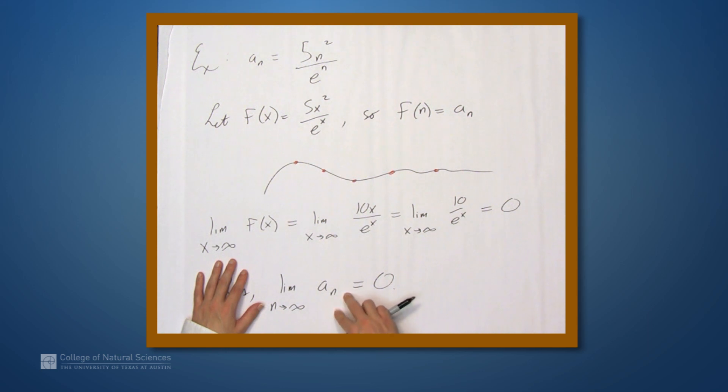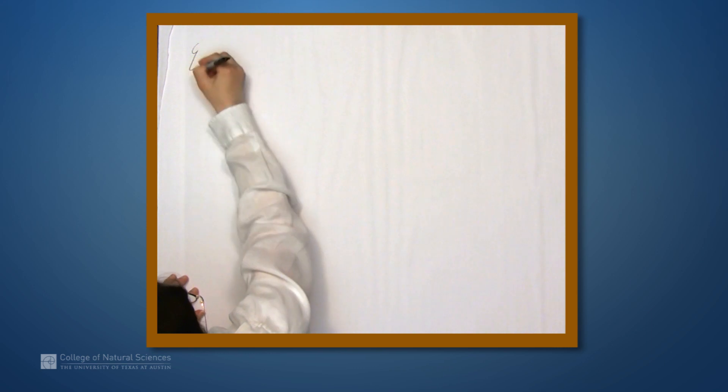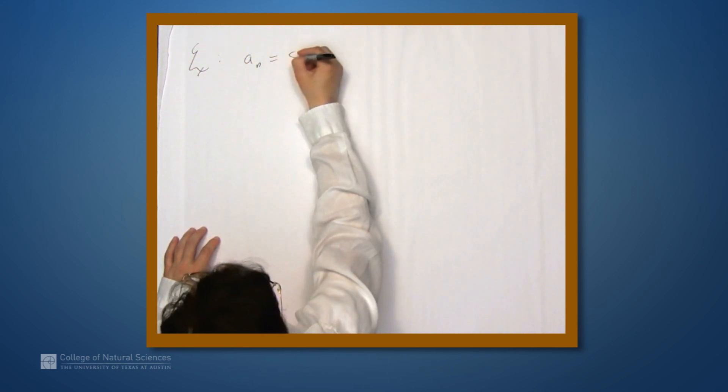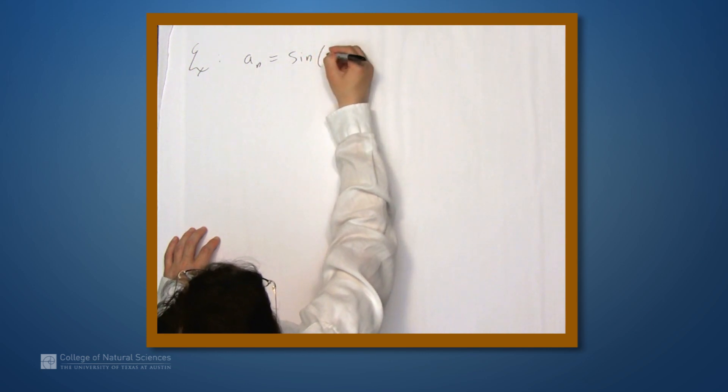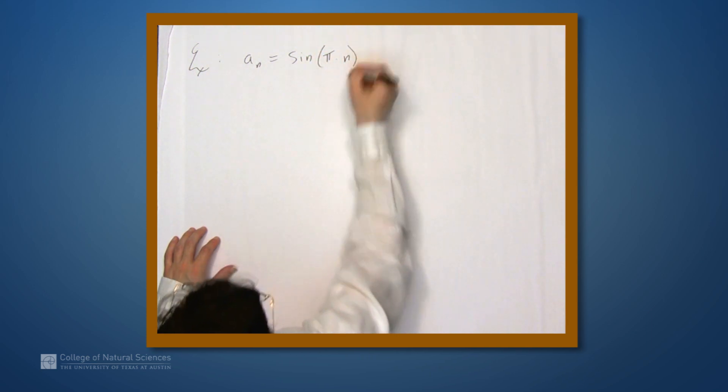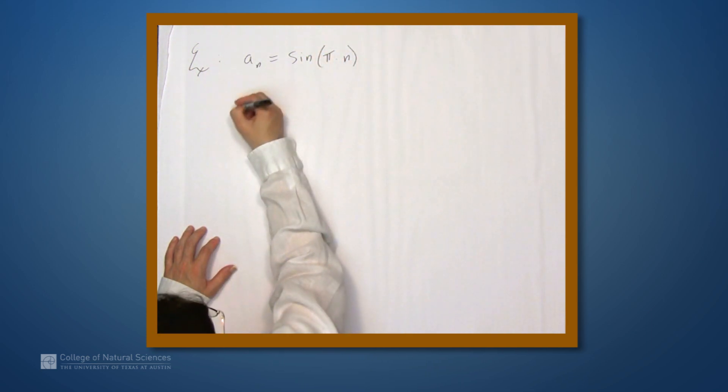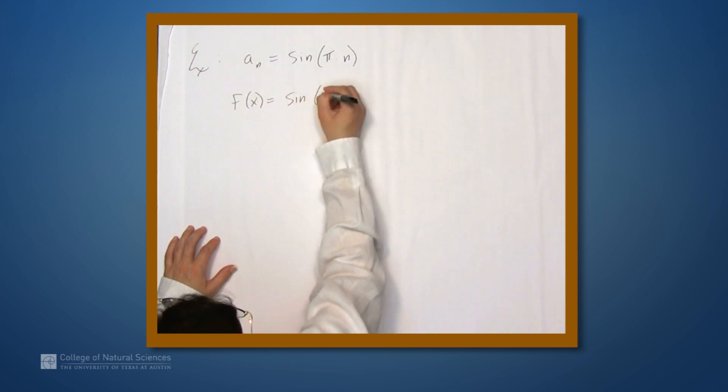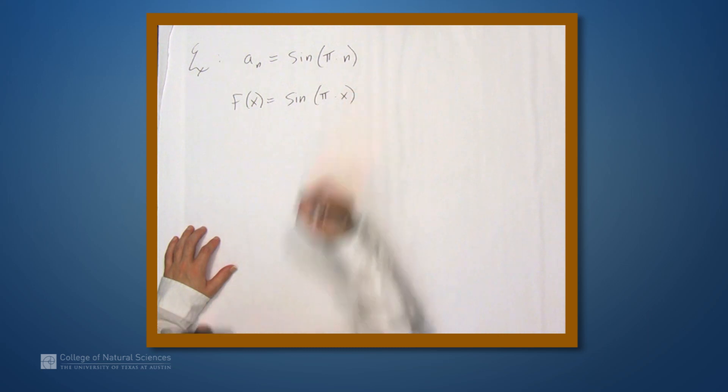So let's look at two examples of that. So let's suppose that a sub n is sine of pi times n, and f of x is sine of pi times x. Well, then f of n is indeed a sub n.